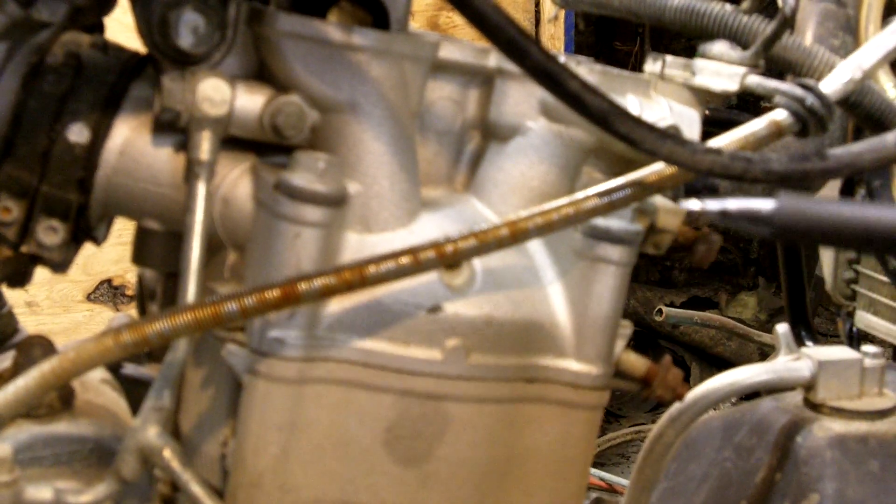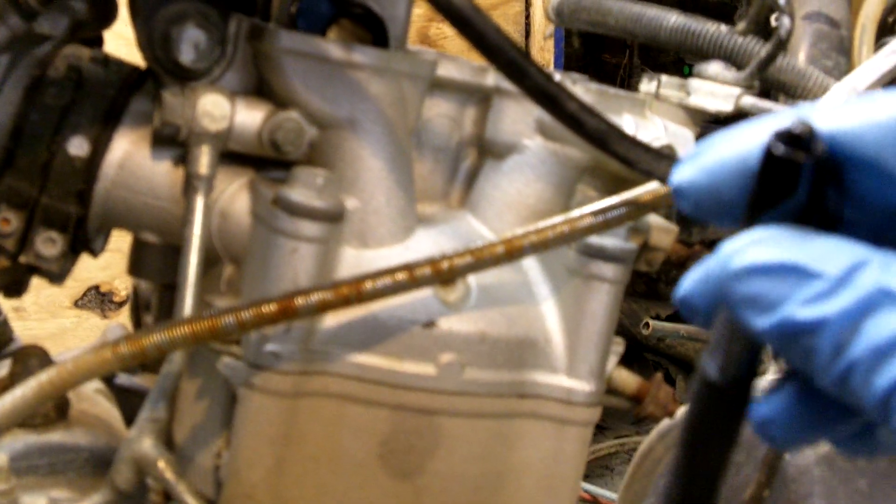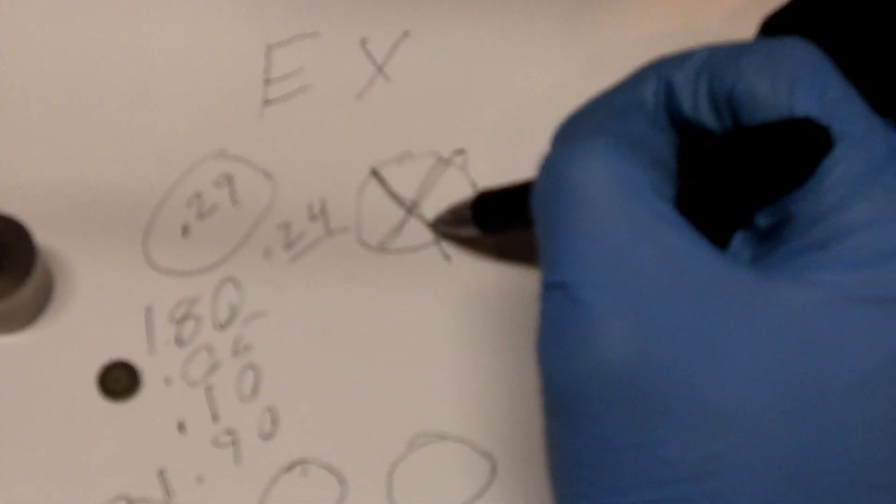...you can go ahead and what you need to do is check each valve. And then what I do is we're using my YFC 450 as reference and we're going to do the exhaust just to show you how it's done. On the YFC 450 exhausts, the tolerances are between .20 and .25 millimeter. What I do is I will go and check my valves. If they are within tolerance...